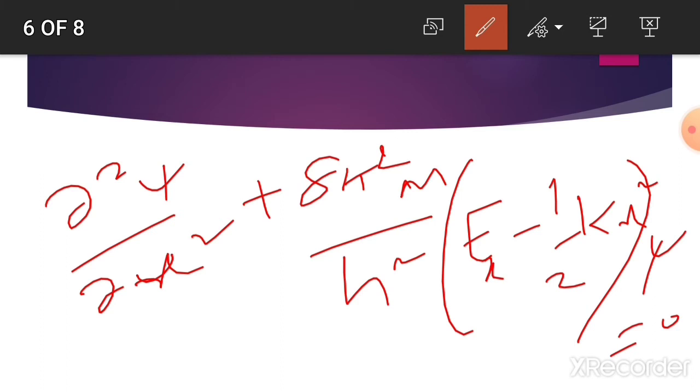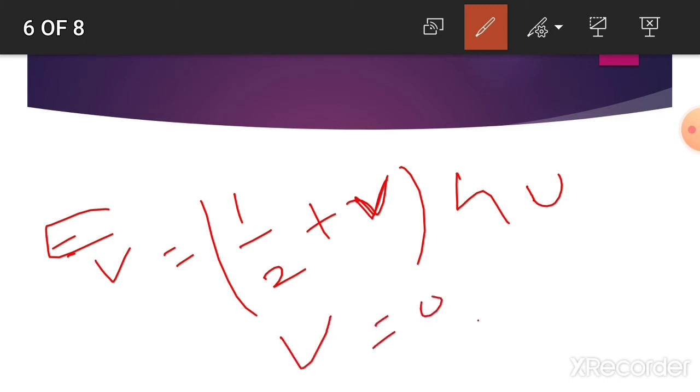The energy can be written as E_v equals (v plus half) times h nu, where v is the vibrational quantum number, and its value is 0, 1, 2, 3, and so on.